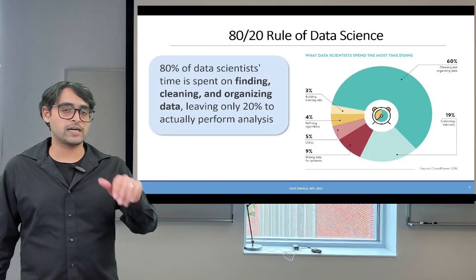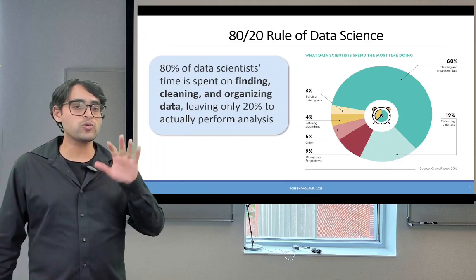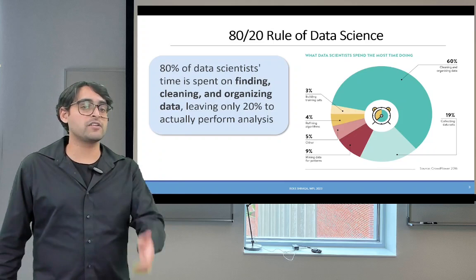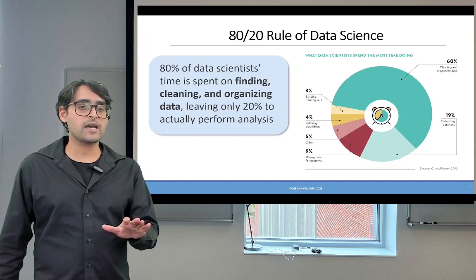and specifically to the 80-20 rule of data science. This rule states that 80% of the time in data science is actually spent on finding, cleaning, and organizing the data, while only 20% of the time is actually spent on analyzing the data.